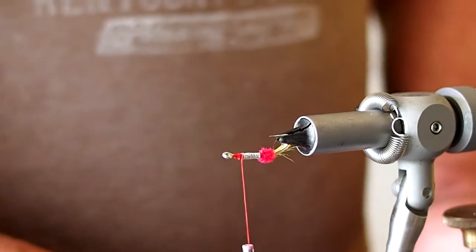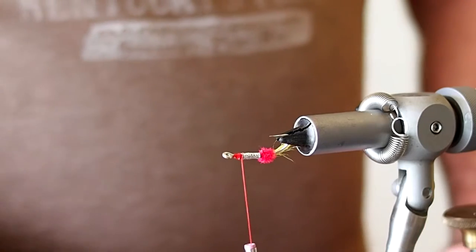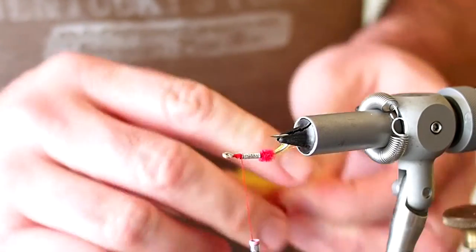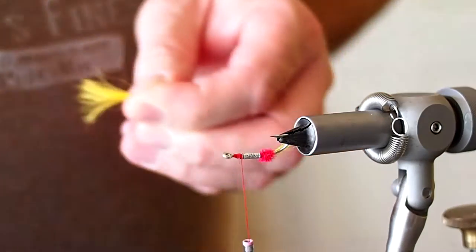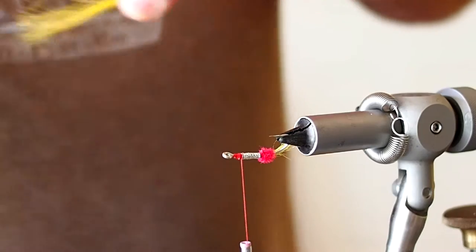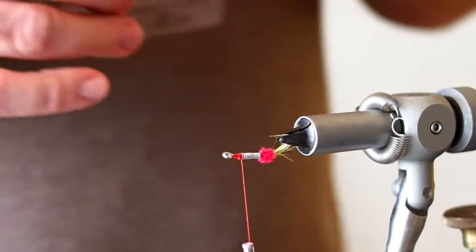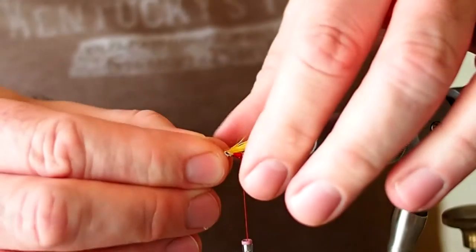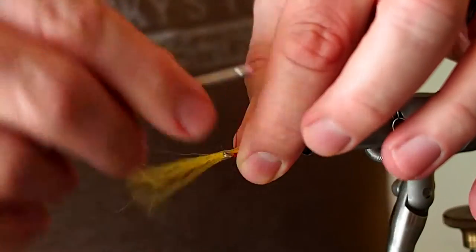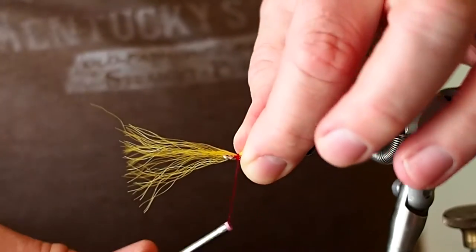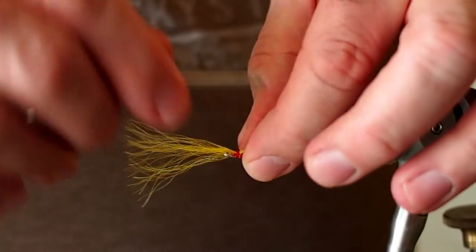For the throat, I'm also going to tie in some yellow kip tail. Again just pull out any of the fluff, grab it by the tips, and pull out any of the shorter hairs. I want the throat to basically touch the tip of the hook. That looks about right.